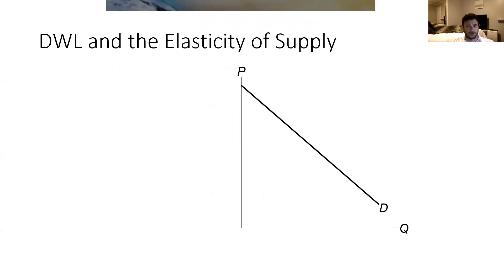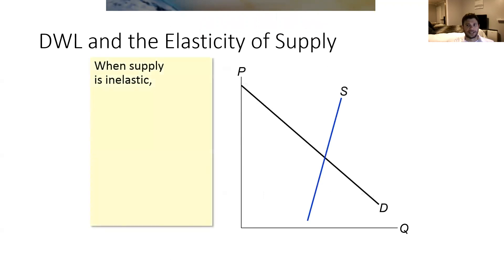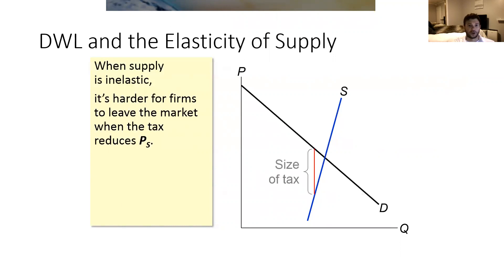We're going to look at a very generic case, starting by looking at the supply elasticity changing. We'll start with a relatively inelastic supply — remember, inelastic means a steeper curve, so if the price changes, the quantity does not change that much. When supply is inelastic, what this essentially means is that when things go south for sellers — meaning when prices go down, which happens to sellers when the tax is implemented — they receive a lower price. This makes things worse for them.